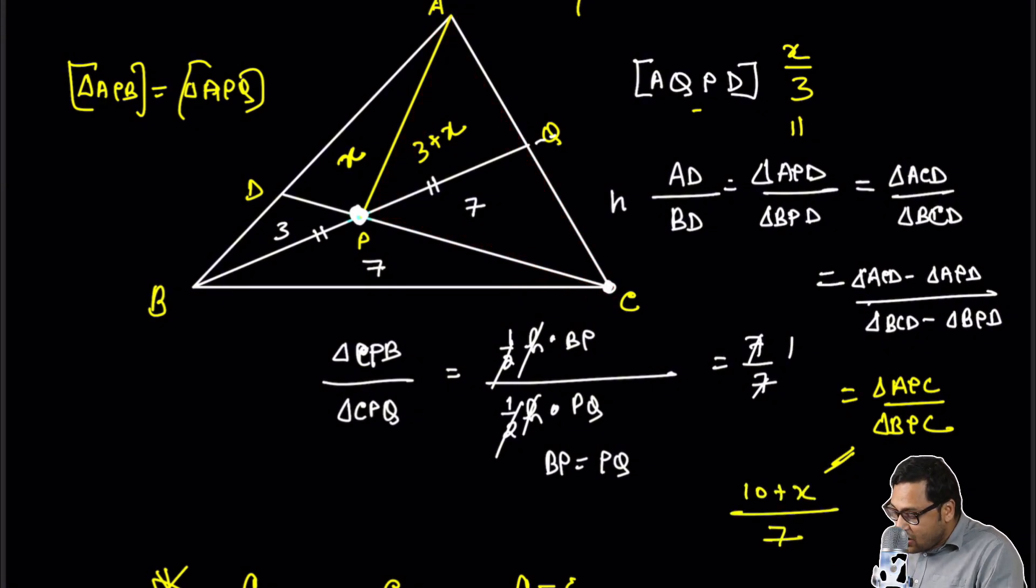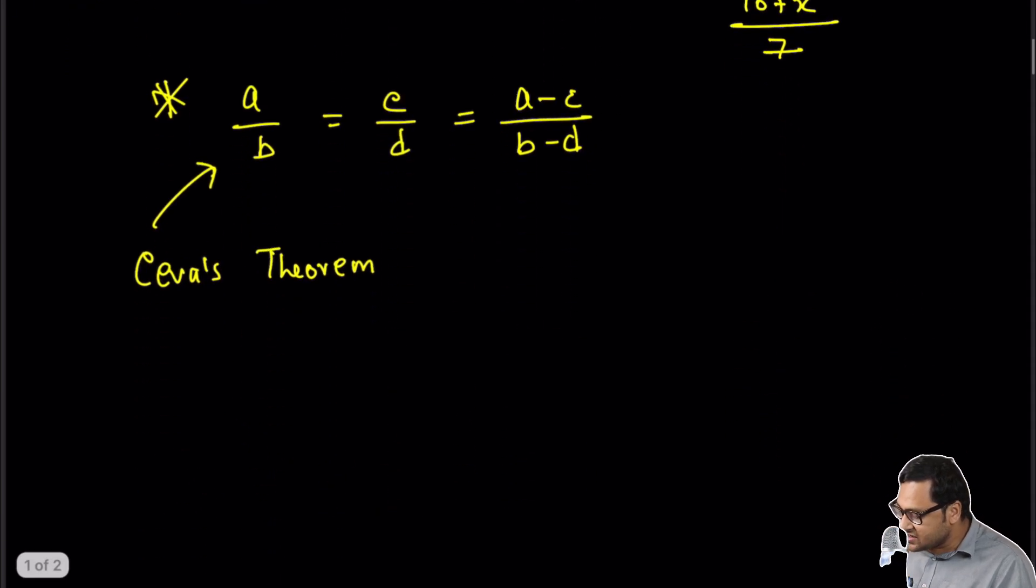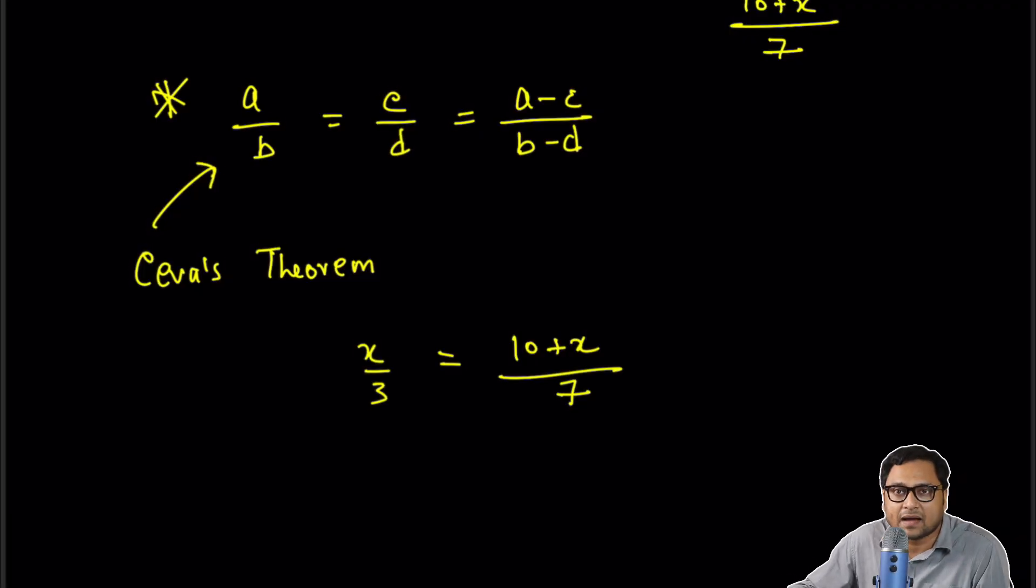So we are now ready to equate the two equations. X by 3 is equal to 10 plus X by 7. So you can just simply cross multiply and find out the value of X.